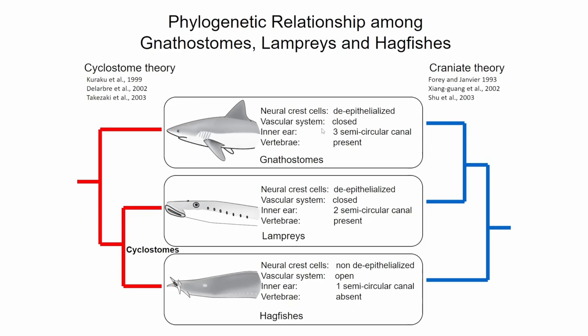The hagfish must be closely related to gnathostomes, but gnathostomes and lamprey have neural crest cells that are delaminated — epithelialized and migratory — while hagfish apparently has no delaminated cells. The vascular system of hagfish was described as open, the inner ear is very simple, and the vertebral element is absent. So to categorize hagfish as a vertebrate is strange.